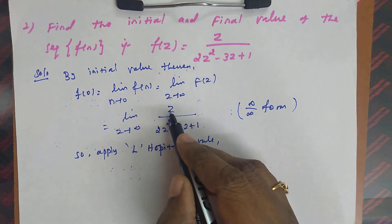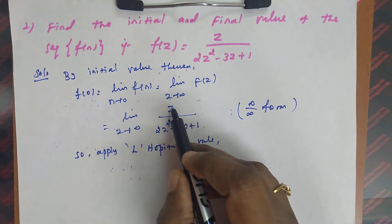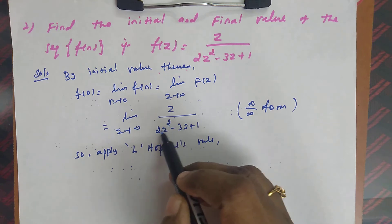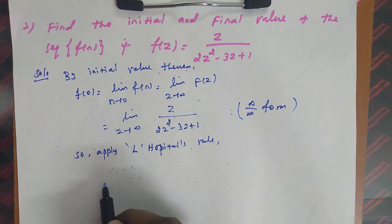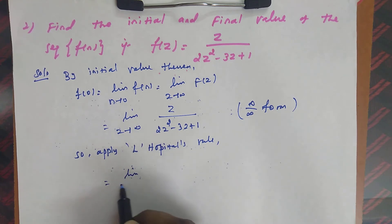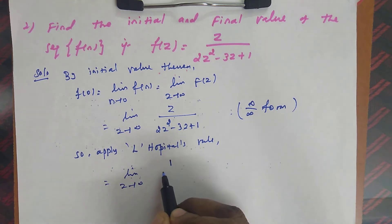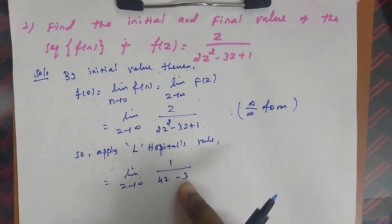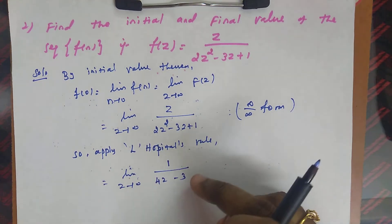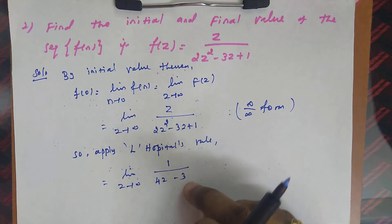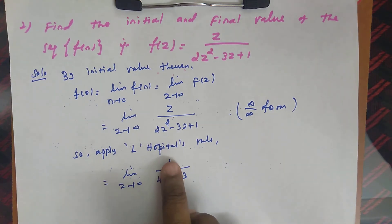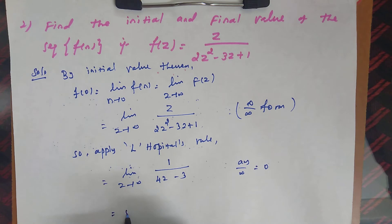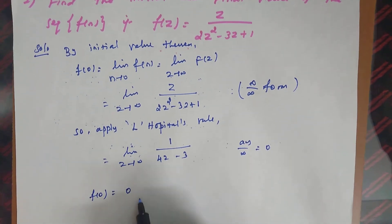Differentiating the numerator z with respect to z gives 1. Differentiating the denominator 2z² - 3z + 1 gives 4z - 3. So we now have limit z→∞ of 1/(4z - 3). Applying z→∞: 1 is a constant and 4z - 3 tends to infinity, so anything divided by infinity is 0. Therefore f(0), our initial value, is 0.